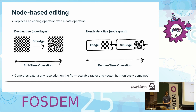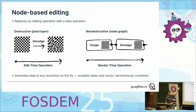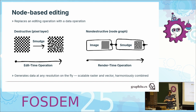The big advantage is that we encode the user's intent. If the user wants to change something later in the editing process — like the aspect ratio of a source image they wanted to smudge — in traditional editing you could no longer change the source image. With a node-based approach, we encode the operation the user did, the smudging, and we can recalculate how that would look with the new source image.